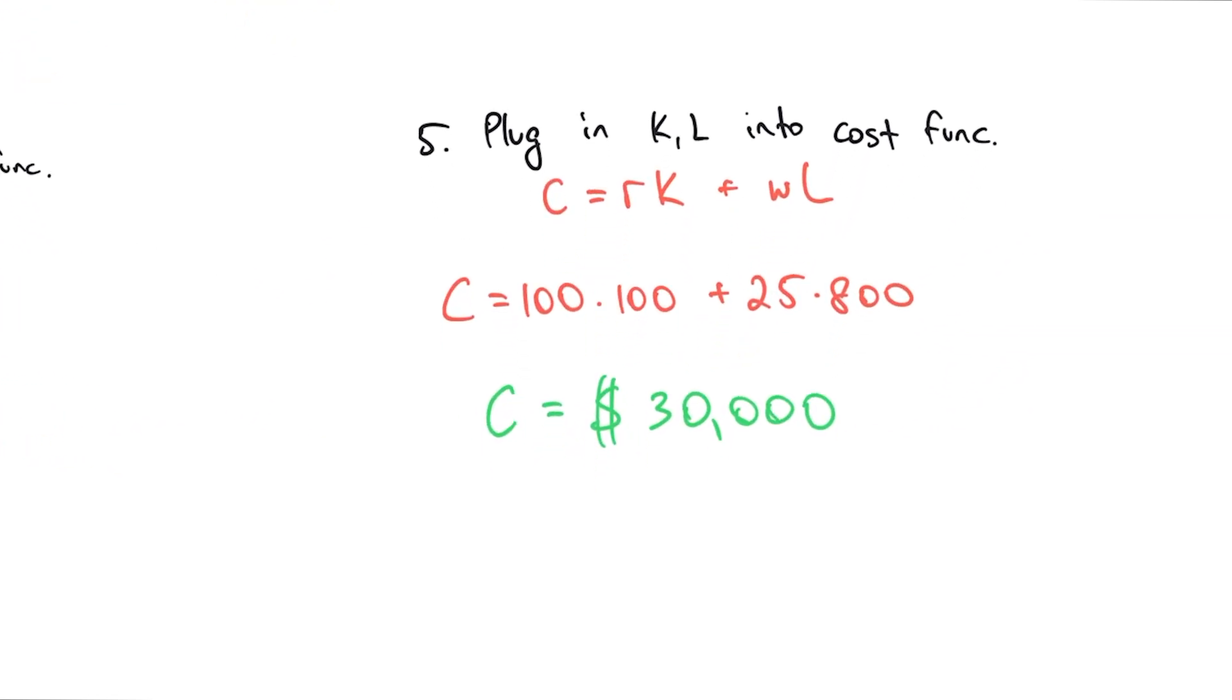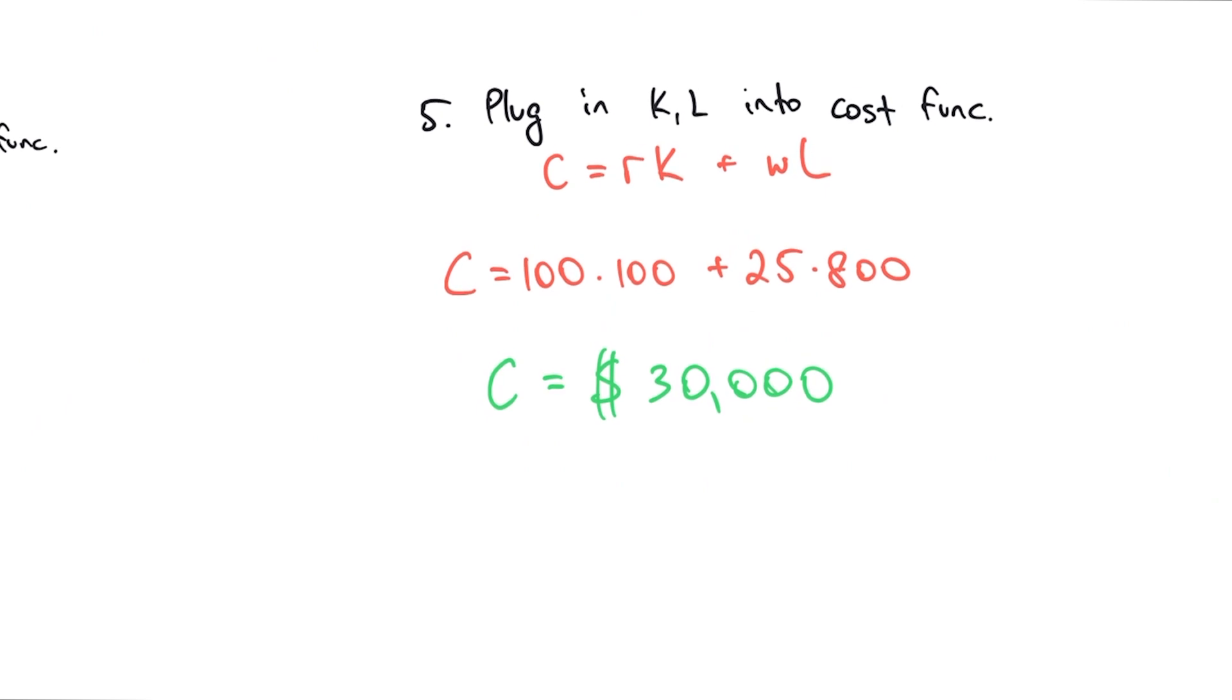Finally, we plug those numbers back into our cost function to find out how much money we will spend. What we get is 100 times 100 plus 25 times 800. So the total money that the company will have to spend under these conditions of rent and wage, if they want to make 4,000 widgets, they'll need to spend $30,000.